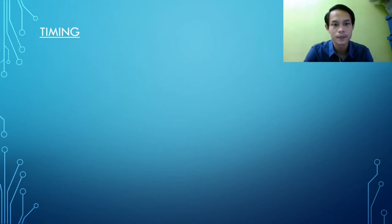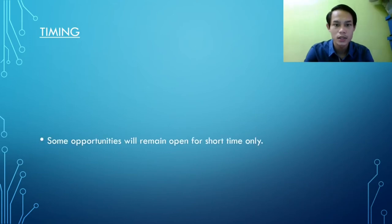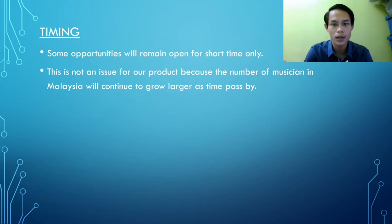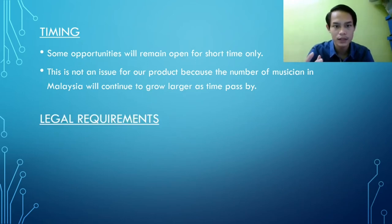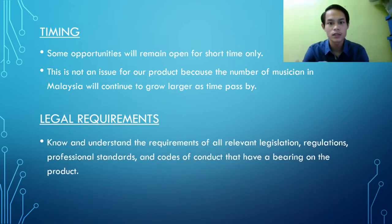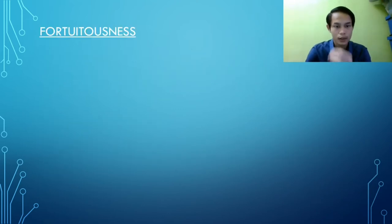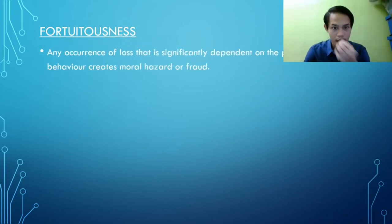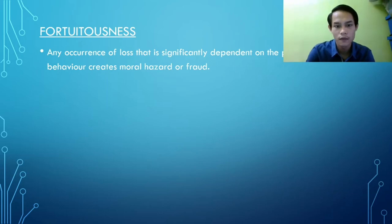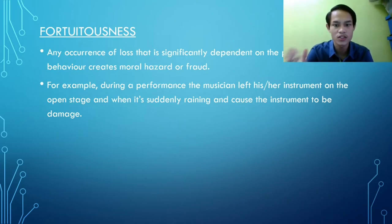Next is timing. Some opportunities remain open for a short time only, but this is not an issue for our product because the number of musicians in Malaysia will continue to grow as time passes. Next is legal requirements — knowing and understanding the requirements of our relevant legislation, regulations, professional standards, and codes of conduct that have a bearing on the product. Next is fortuitousness — any occurrence of loss significantly dependent on the policyholder's behavior creates moral hazard or fraud. For example, during a performance the musician left their instrument under an open stage and when it suddenly started raining, the instrument was damaged.